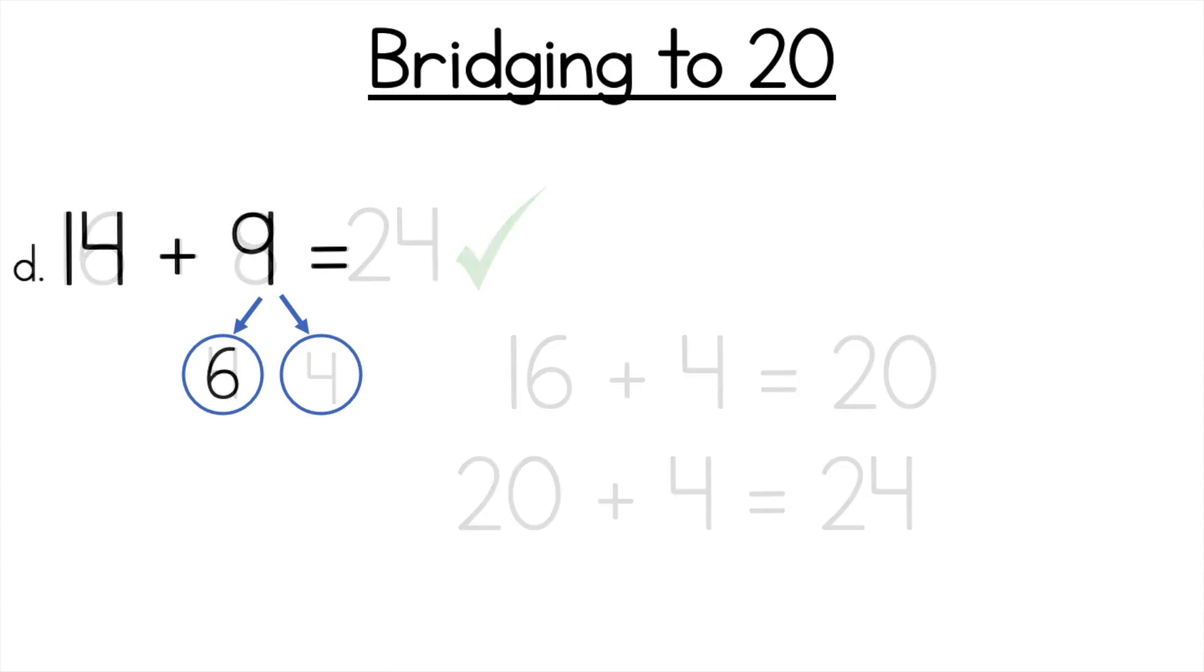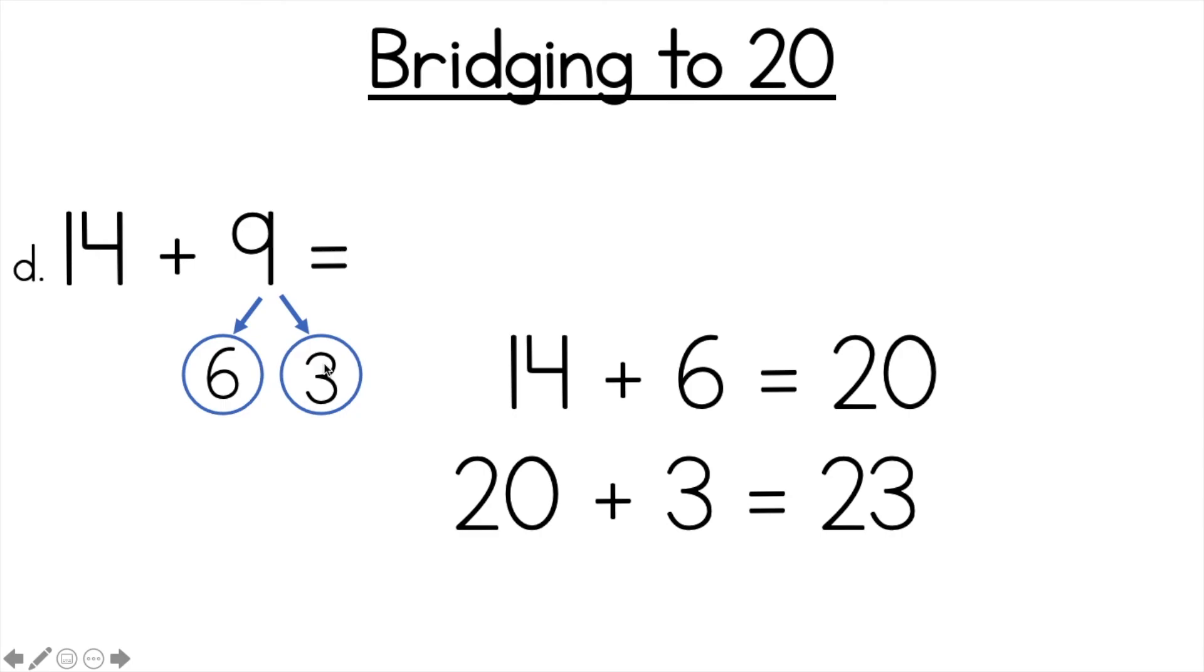Last one. D. 14 plus 9. All right. 6 plus what equals 9? I'm going to count on 6. 7, 8, 9. 3. Okay. So 14 plus 6 is 20 because we want to make 20. It's an easy number for us. Then we just have to add the last number. 20 plus 3 is 23. There's your answer.